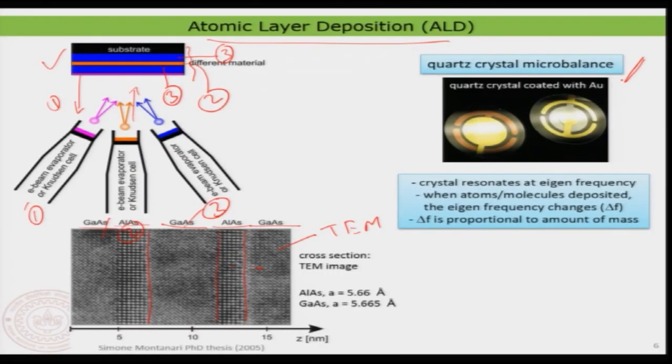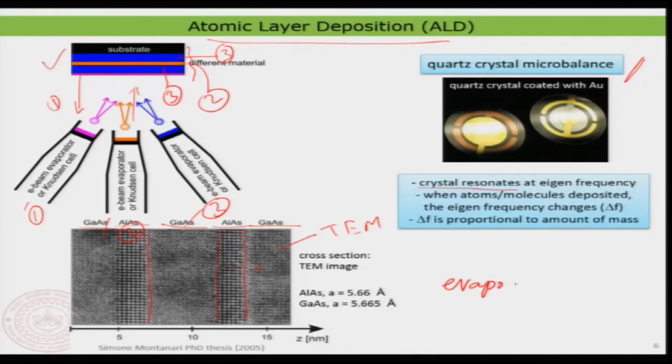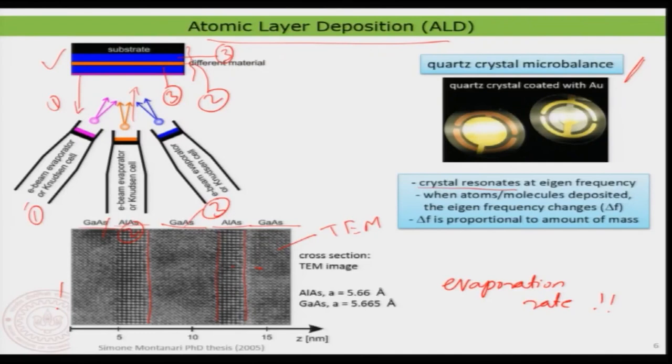One more important thing: we need a quartz crystal microbalance. This technique uses a quartz crystal resonating at its resonant frequency. As mass is deposited, there is a change in the resonant frequency, and that change is directly proportional to the amount of mass deposited. Using this quartz crystal microbalance you can control the evaporation rate — extremely important during the evaporation process. By precisely controlling the deposition rate of the three different materials, you can form the precisely defined interfaces seen in the TEM image.